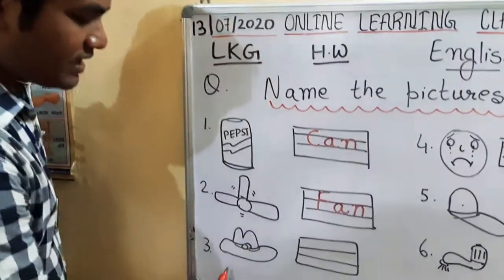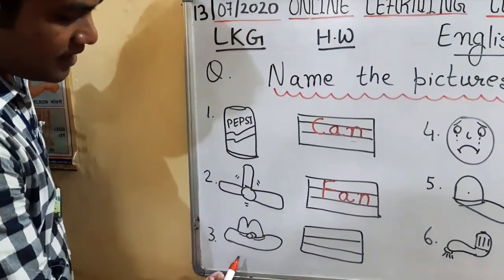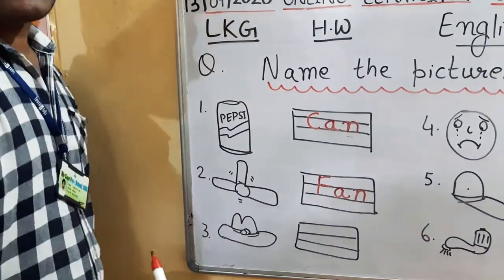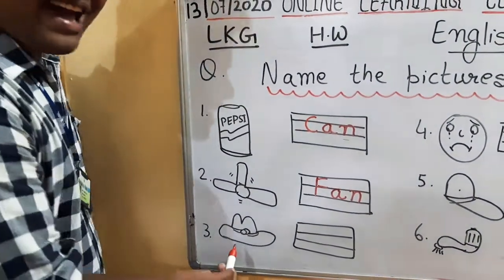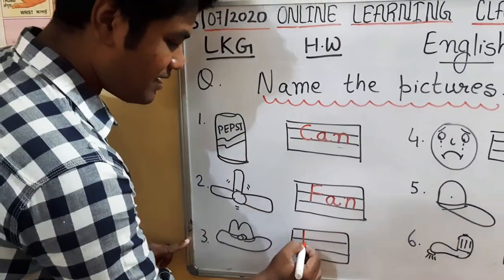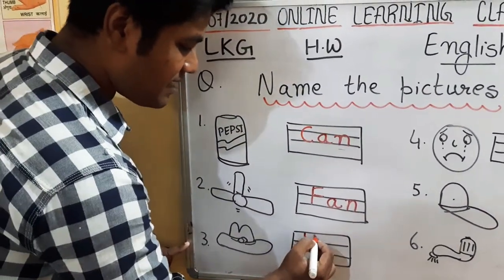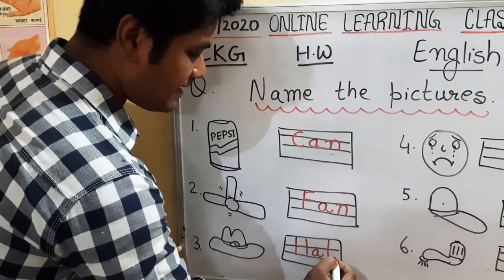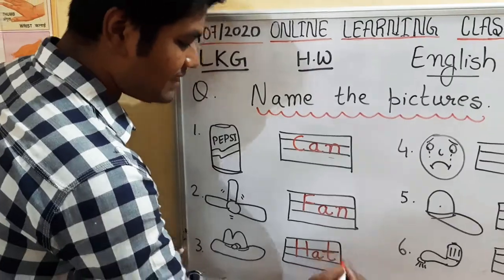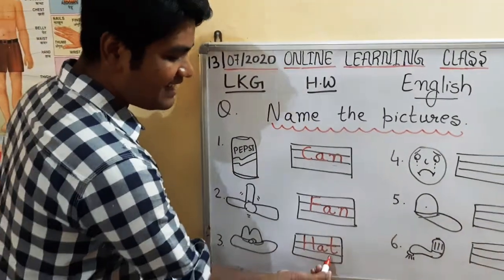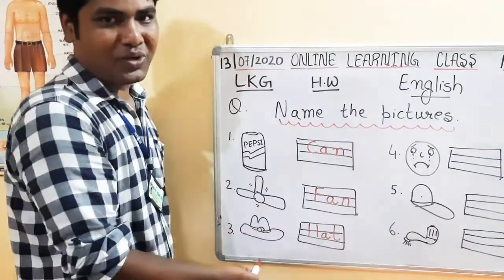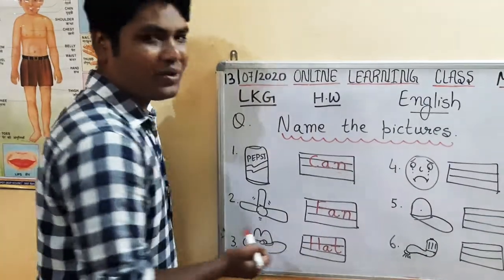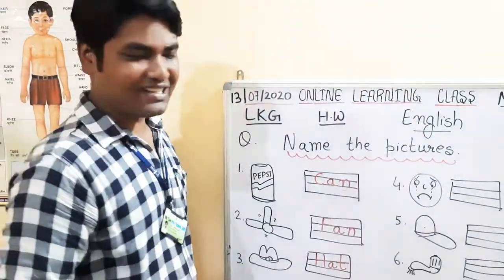Next, check the picture. Hat. This is a hat. Write down H-A-T, hat. A-T, at sound word. Hat is an example of at sound words.